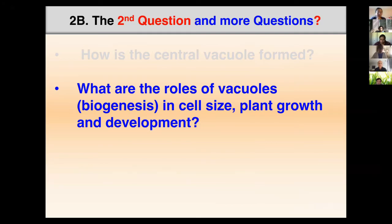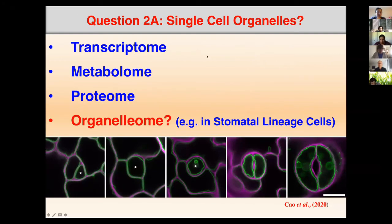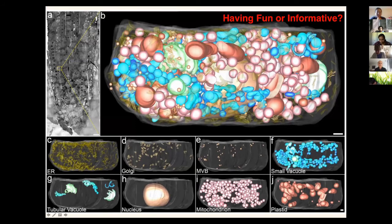Now let's come to the second question: what are the roles of the vacuole in regulating cell size and plant growth and development? The more we learn, the more questions we have. One question is about single-cell organelle organization. You can see in a single cell: small vacuoles, MVBs, Golgi, ER, tubular vacuoles, nucleus, mitochondria, and plastids — the cell is really crowded with all these organelles.